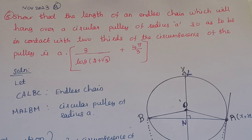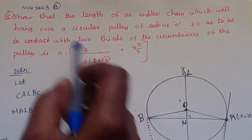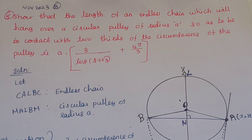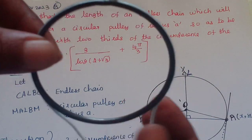This is a statics problem from the university 5-mark questions, November 23rd. Show that the length of an endless chain which will hang over a circular pulley of radius A, so as to be in contact with two-thirds of the circumference of the pulley. We need to prove this — the length of the endless chain, we need to prove it.